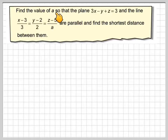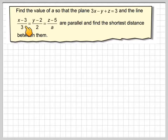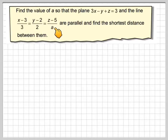Find the value of a so that the plane 3x minus y plus z equals 3, and the line (x minus 3)/3 equals (y minus 2)/2 equals (z minus 5)/a, are parallel, and find the shortest distance between them.